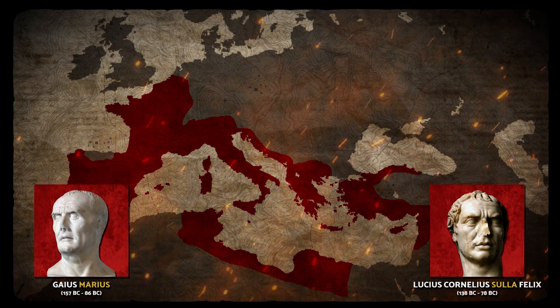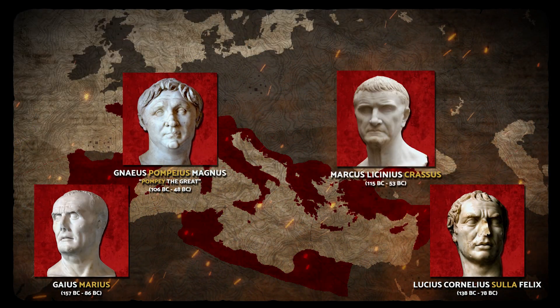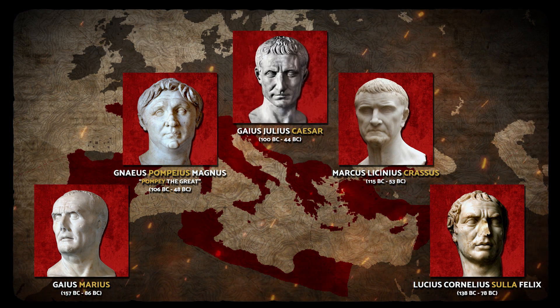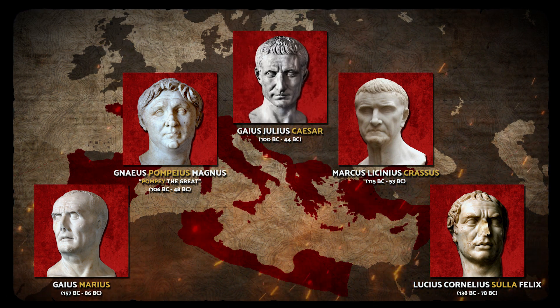During the last century of the Roman Republic, violence became the preferred and eventually only means by which someone could advance their political agenda. Civilian control of the army collapsed as generals like Marius, Sulla, Pompey, Crassus, and finally Caesar began to command the personal loyalty of the legions. Political questions were no longer decided in the Senate, but on the battlefield.